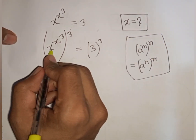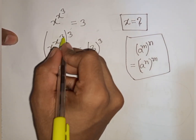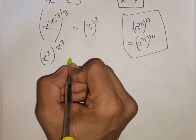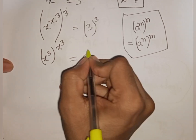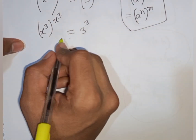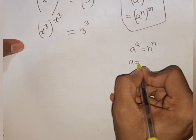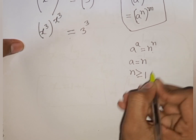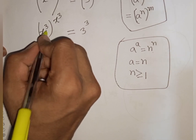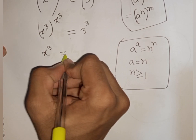So it will be x power 3, then bracket power of x cubed. x is equal to 3 power 3. You can apply the rule that a power a equals n power n, so a equals n where n is greater than or equal to 1. According to this rule we compare: x power 3 is equal to 3.